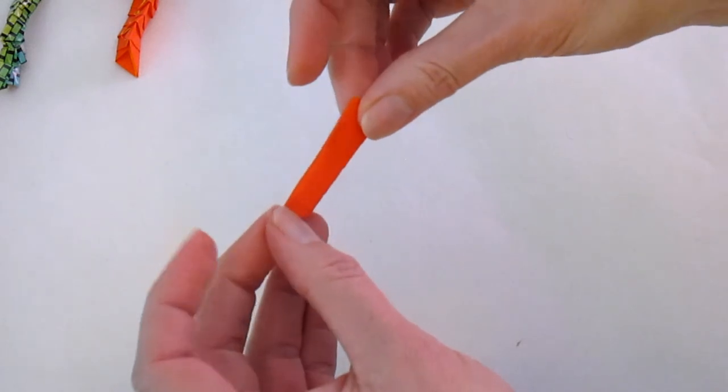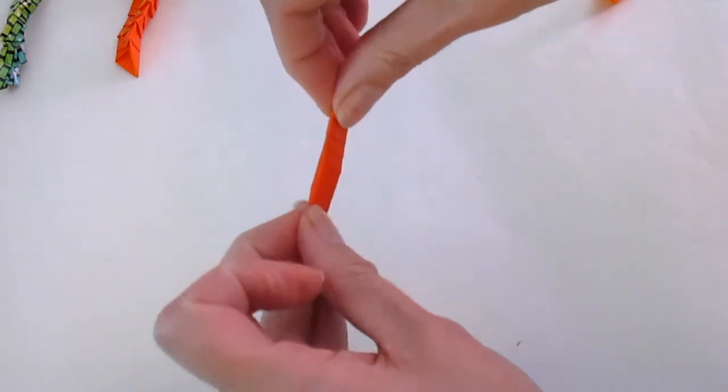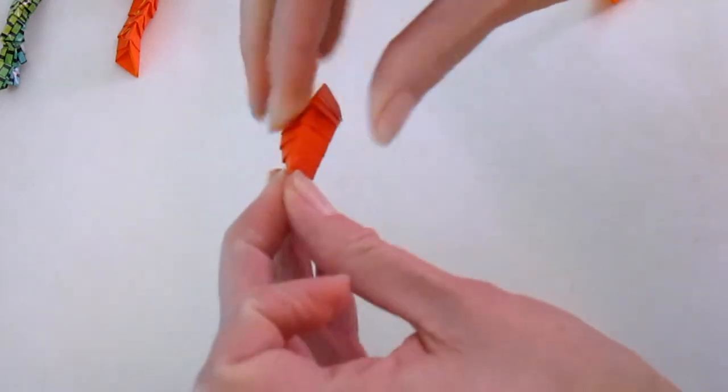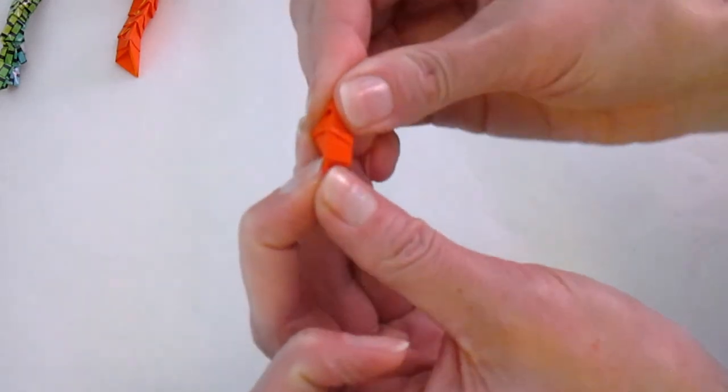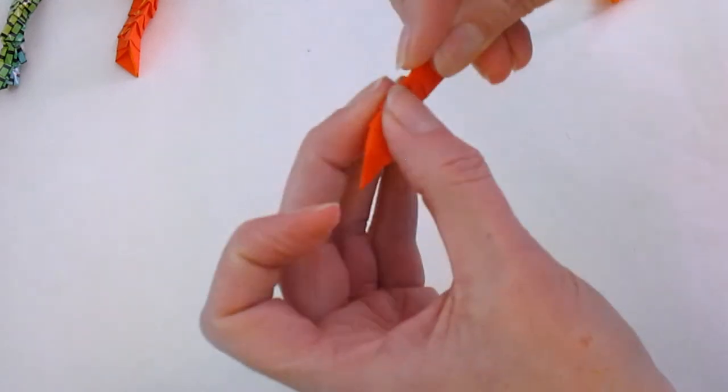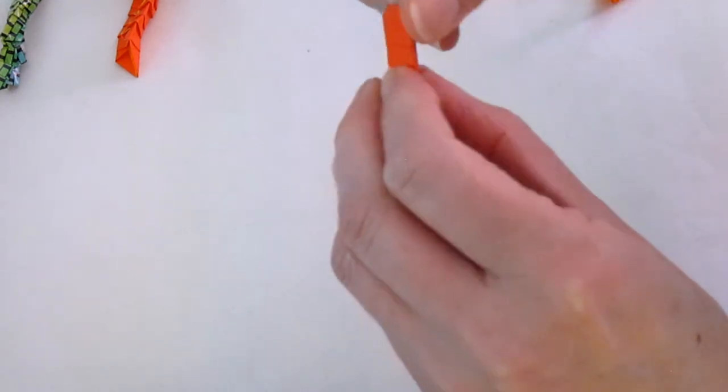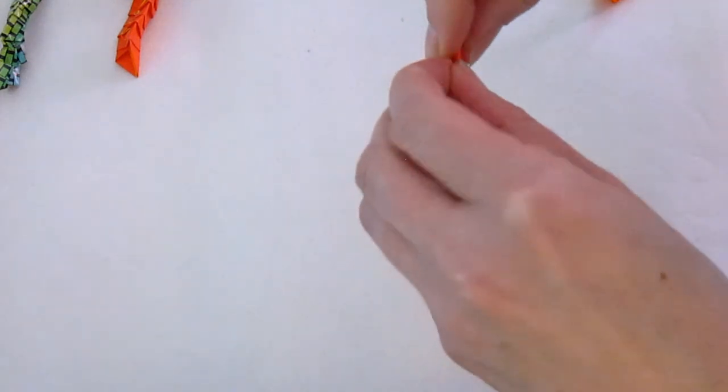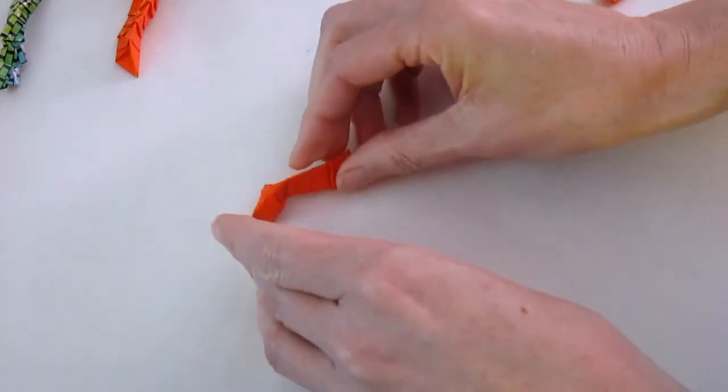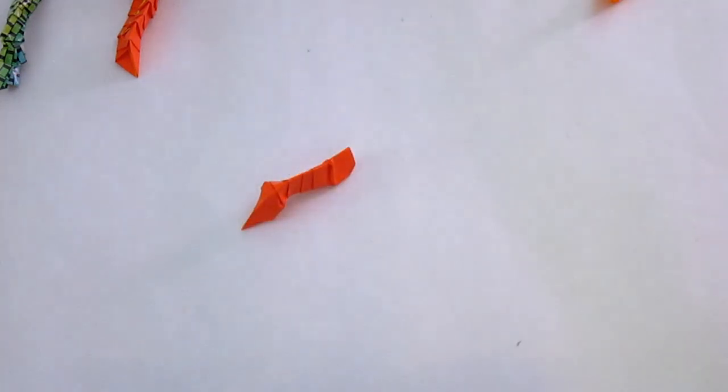And then grab at each end, and pull, and bend a little bit, so that you can make the shape of your caterpillar. If you want it to look like an inchworm, you can have it be sticking up at the front and down in the center. And there's your completed caterpillar.